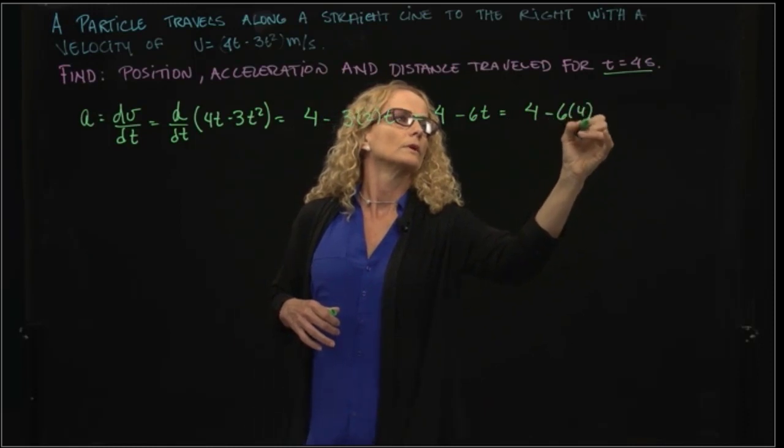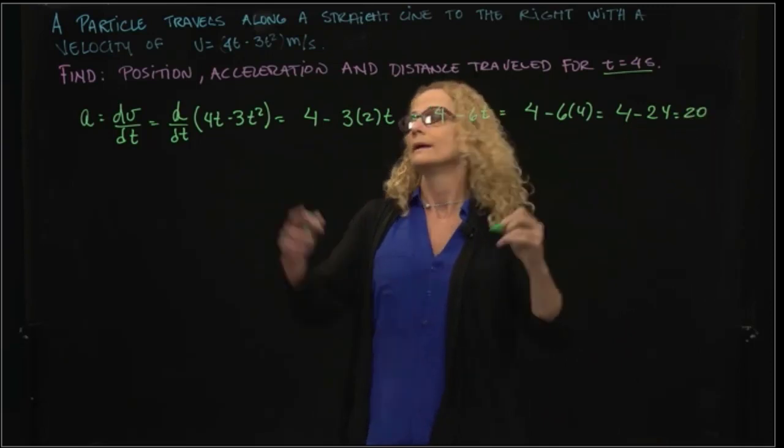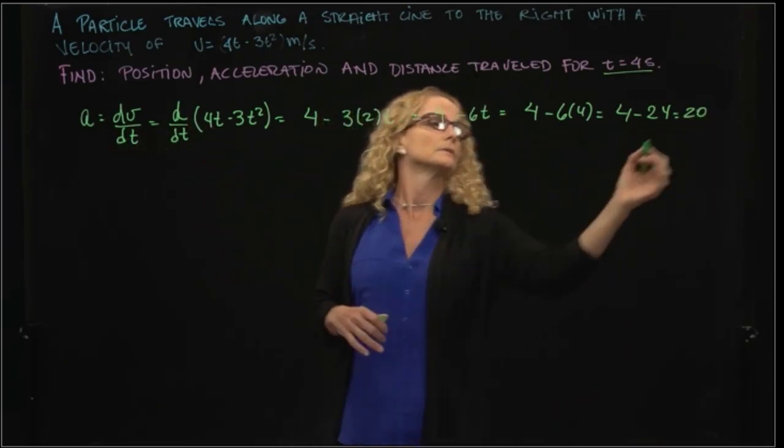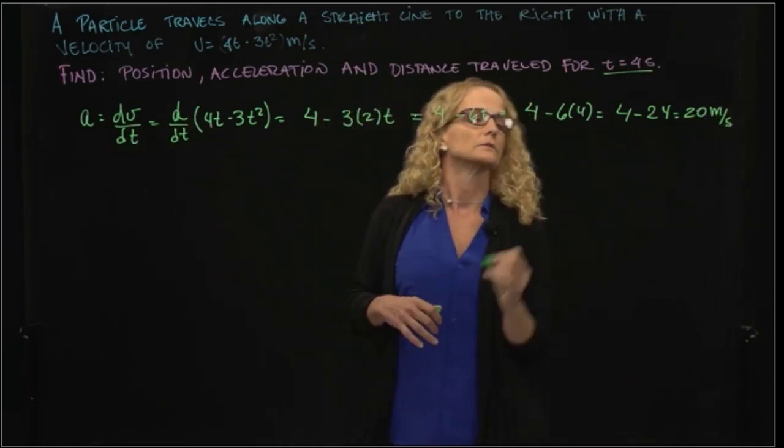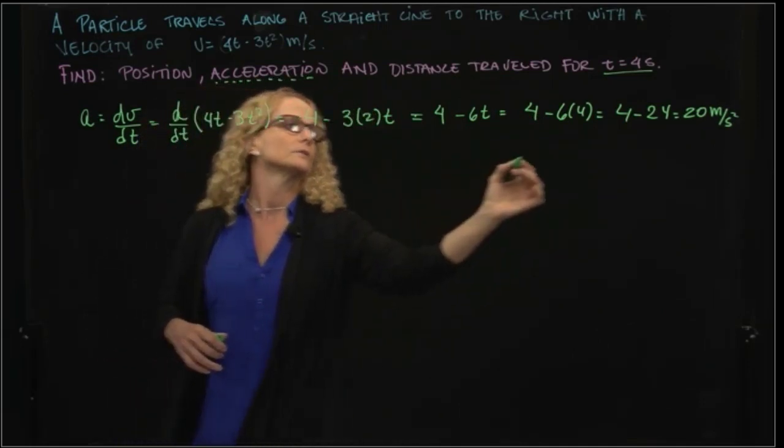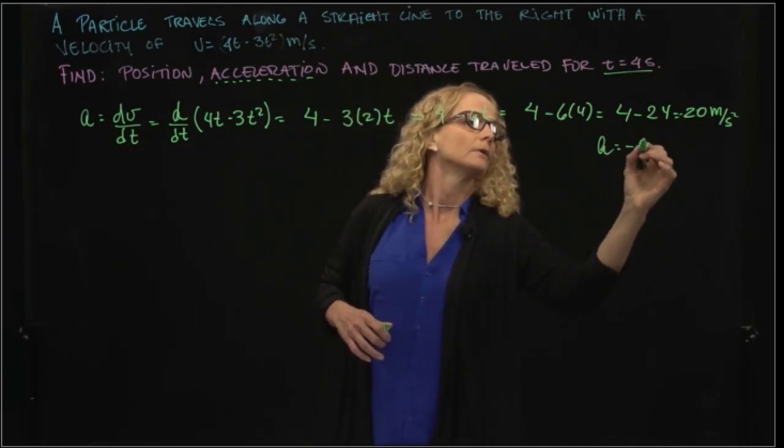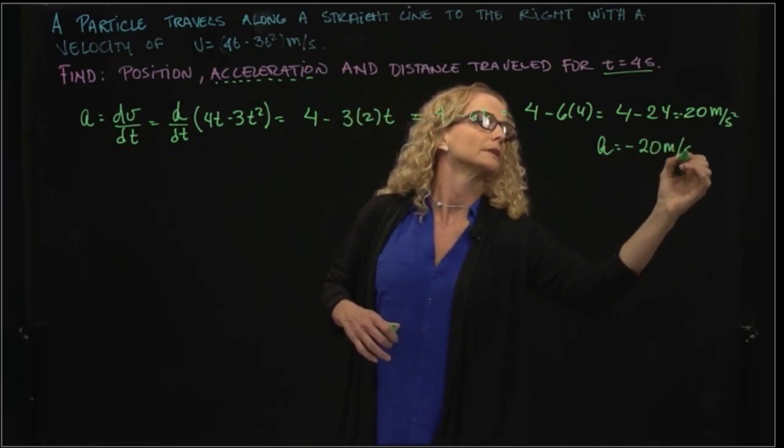So that will give us 4 - 24, which is -20. And what are our units? Meters over second squared, right? So our first answer: our acceleration is -20 meters over second squared.